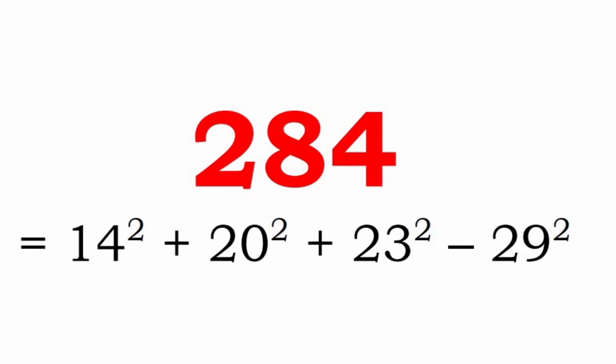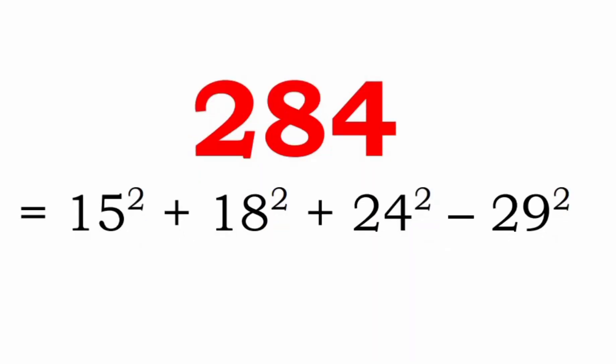A similar type of expression is 14² plus 20² plus 23² minus 29², where the digits used are 0, 1, 2, 3, and 9. Yet another representation of 284 is 15² plus 18² plus 20² plus 25² plus 24² minus 29².